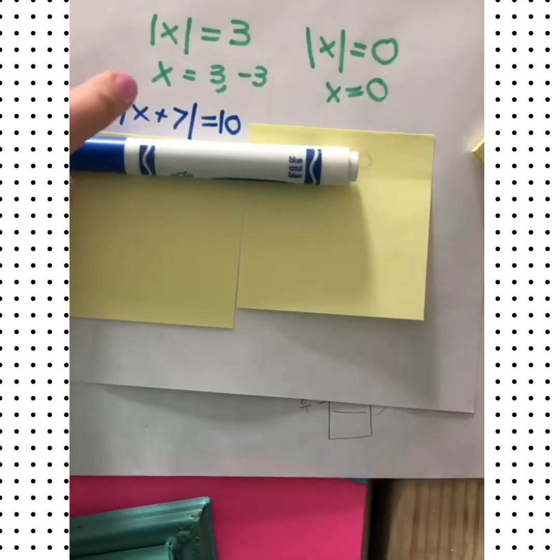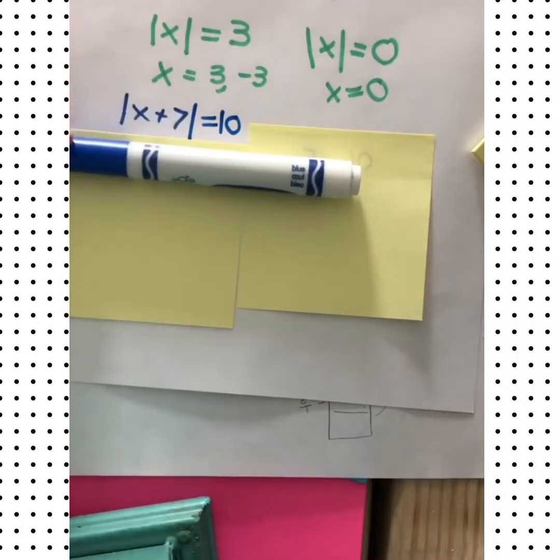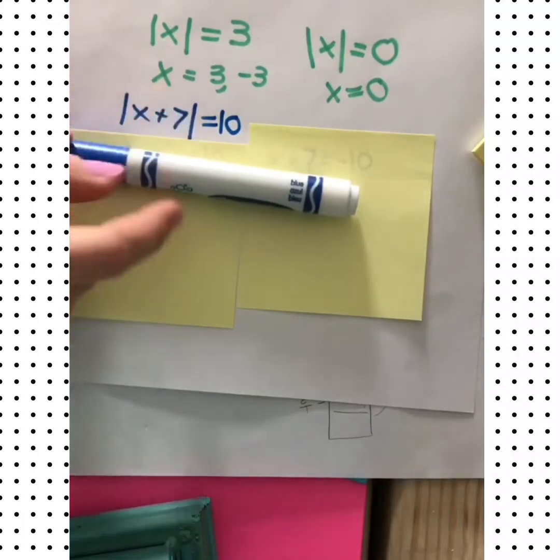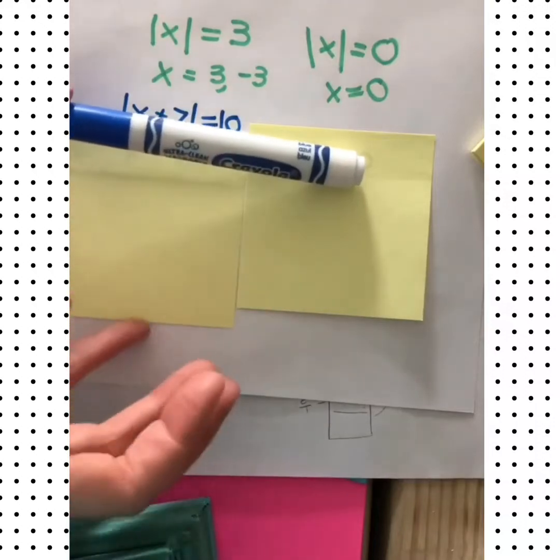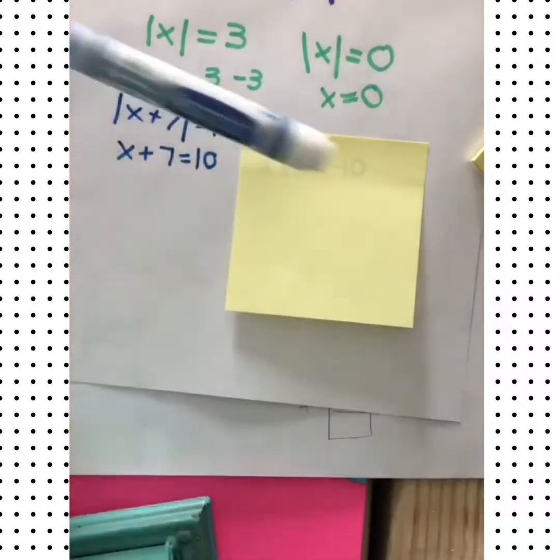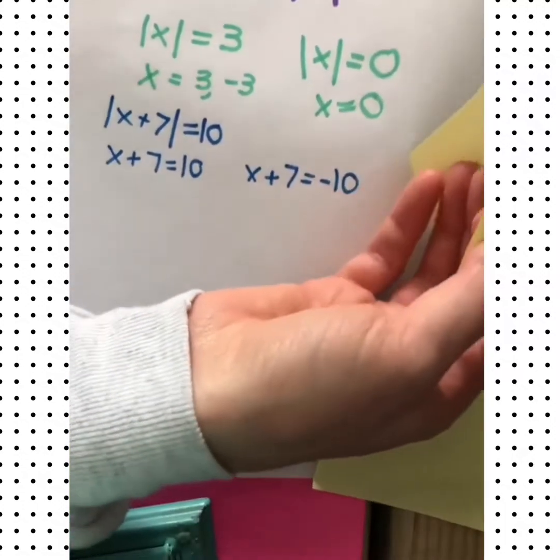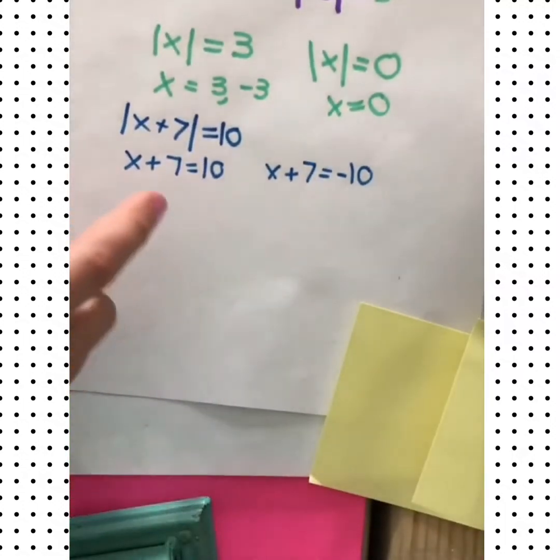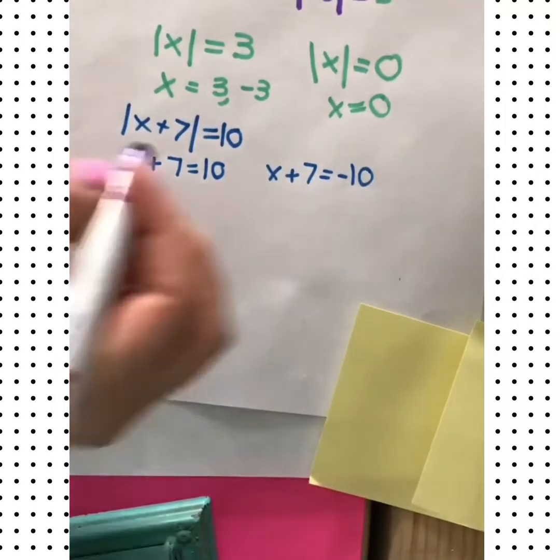Let's look at an equation. The absolute value of x plus 7 equals 10. That means everything inside of these absolute value bars has a distance of 10 from zero. So we have to set up two cases. x plus 7 might be equal to 10, but it could also be equal to a negative 10. Either of these will lead to an absolute value of 10.